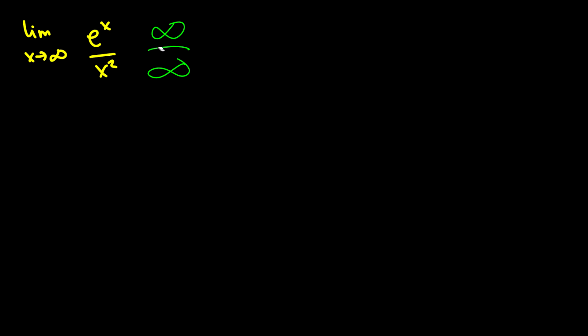That doesn't help us, so let's use L'Hospital's rule. The limit as x goes to infinity of e^x over 2x, since the derivative of e^x is e^x and the derivative of x^2 is 2x. We still get infinity over infinity.